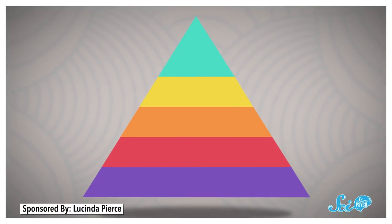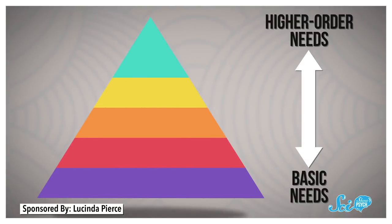What he came up with was a pyramid, which you've probably seen in any Psych 101 class. The most basic needs are at the bottom, and higher order needs are at the top. At the base, he put physiological needs—the stuff you need to survive, like food, water, and shelter.